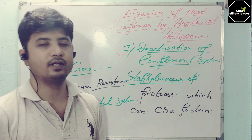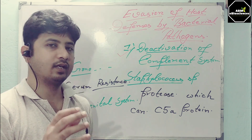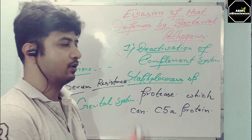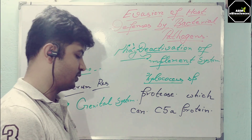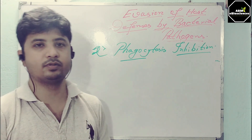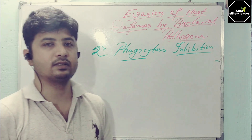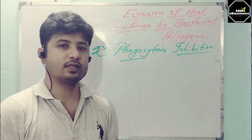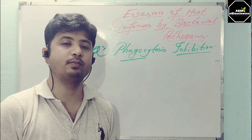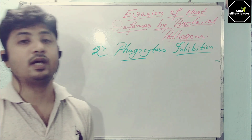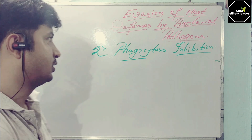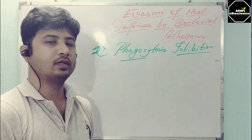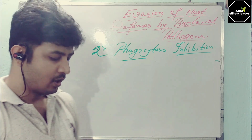Not all bacteria evade all the pathways, but there are bacteria which have several capabilities to evade host defenses. The next mechanism involves APC cells, which have a large role in clearing pathogens from the body — they not only perform clearance but also activate the adaptive immune response as well as the non-specific immune response. There are bacteria which have mechanisms to avoid phagocytosis.